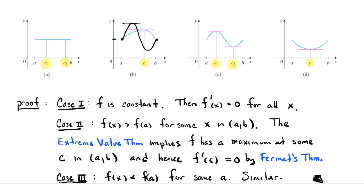The third case I won't go through in detail — if there's some x smaller than f(A) and f(B), then the Extreme Value Theorem says there's a minimum, and the derivative is zero at that minimum by Fermat's Theorem too. That's treated similarly. So the extreme value in the interval has to be interior because the endpoints are equal in cases two and three, and Fermat's Theorem says the derivative will be zero there.